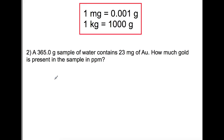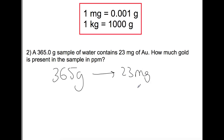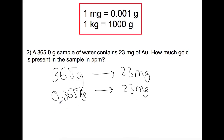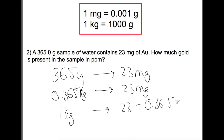In the second example, we have 365 grams of water and 23 milligrams of gold. We don't need to convert the milligrams side, but we do need to convert 365 grams to kilograms. Scaling up to 1 kilogram by dividing both sides by this number gives 63 milligrams in a kilogram, which is 63 parts per million.